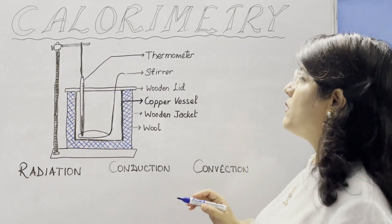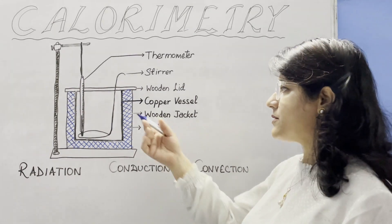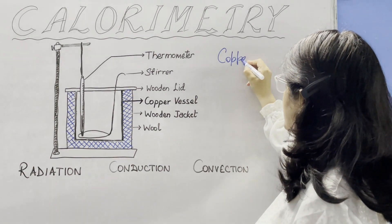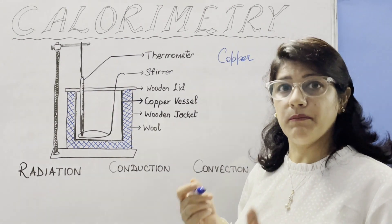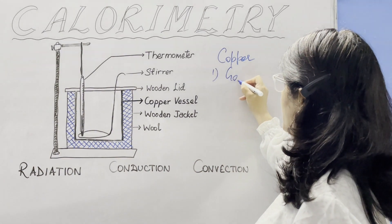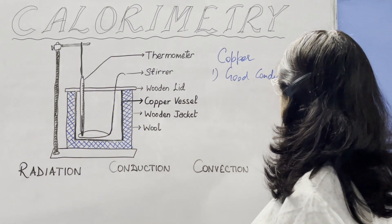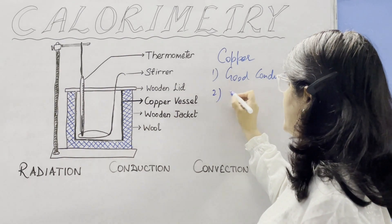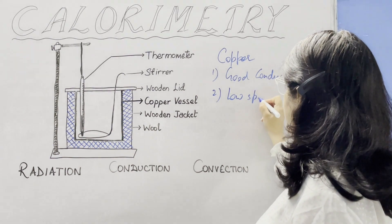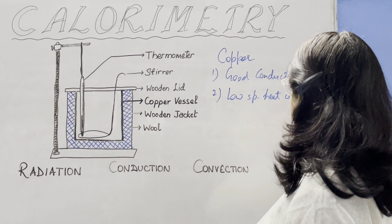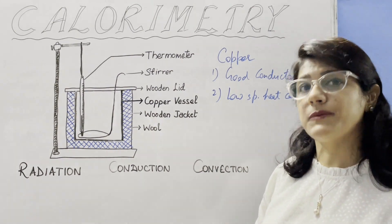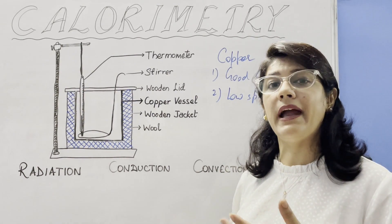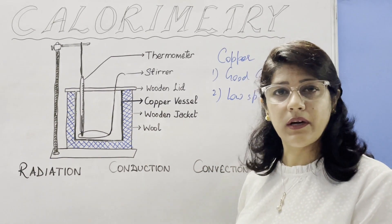The material used in the formation of a calorimeter is copper. Copper is used because first, it is a good conductor of heat, so it soon acquires the temperature of its contents. Second, copper has low specific heat capacity. A good conductor generally has low specific heat capacity because it shows a rapid and high rise in temperature.